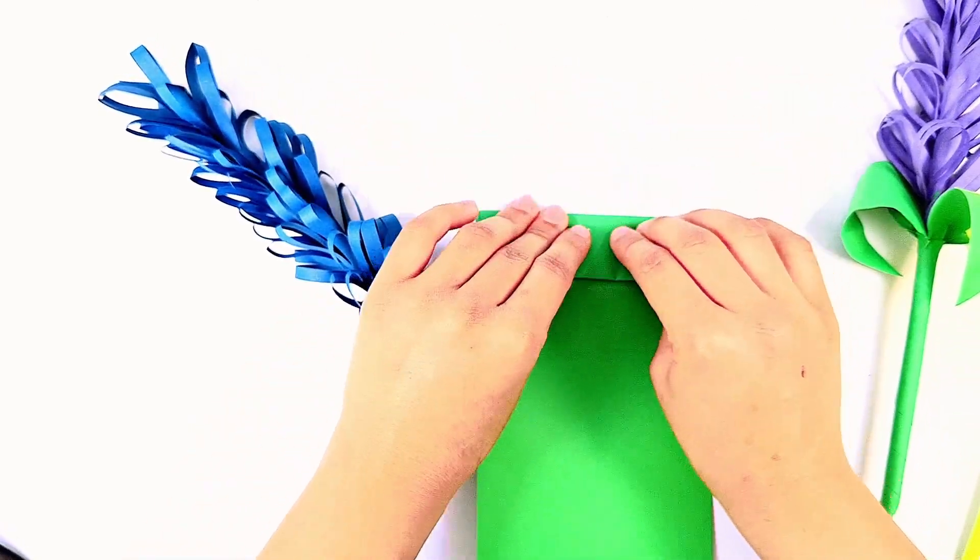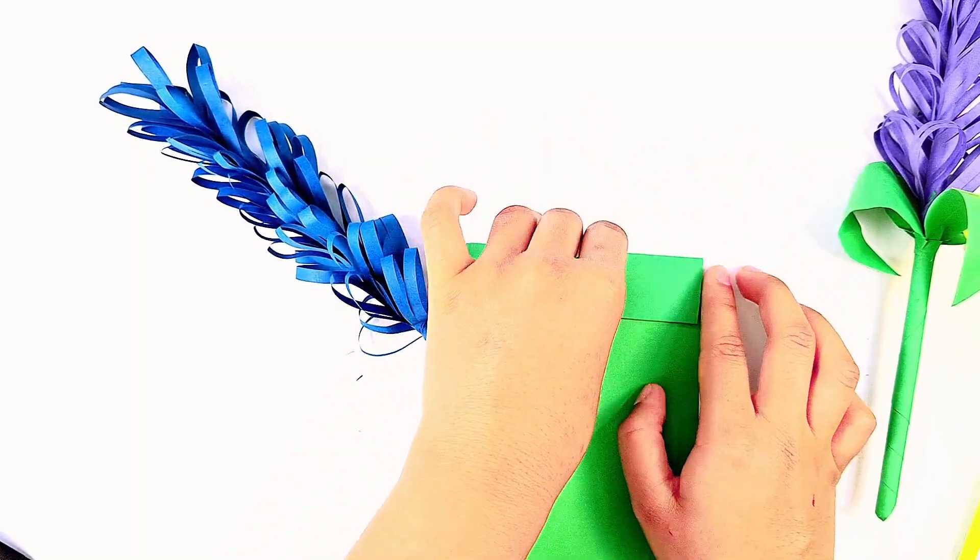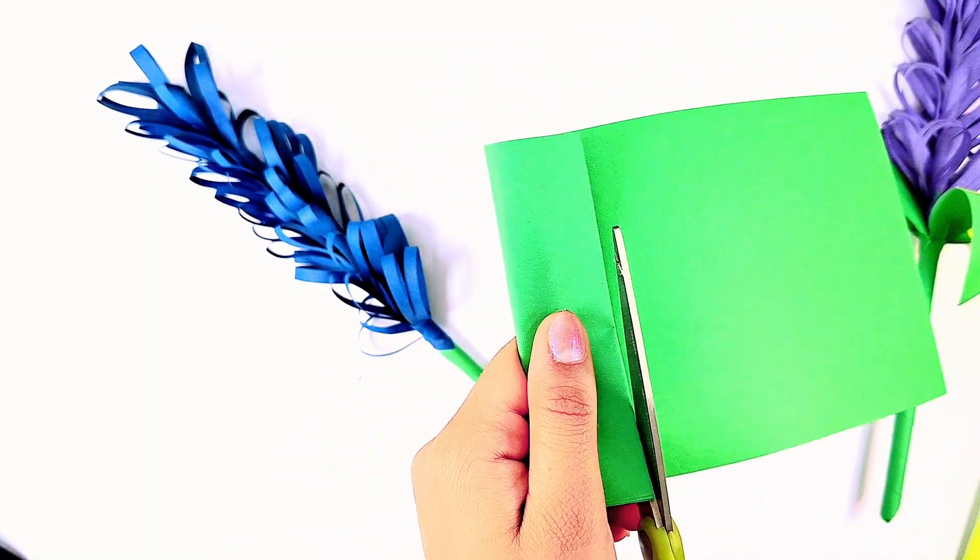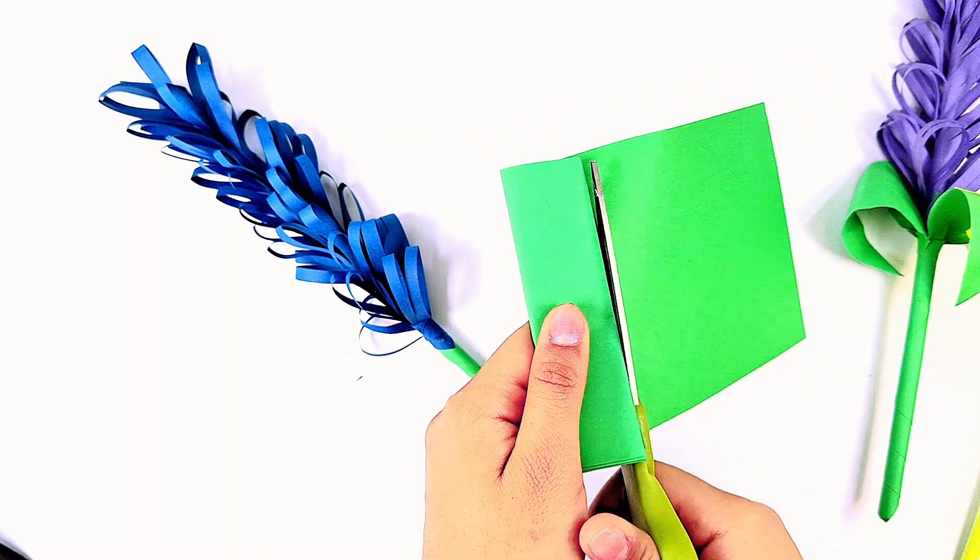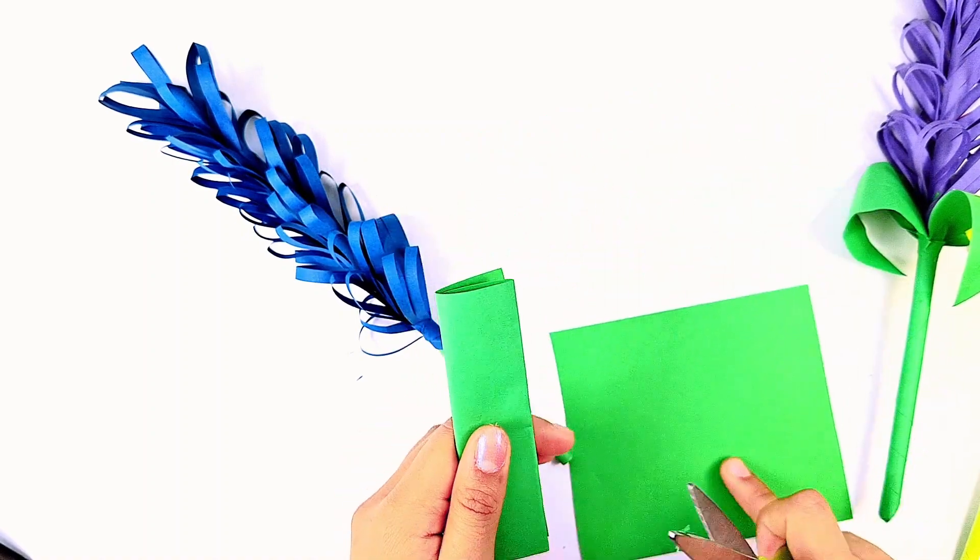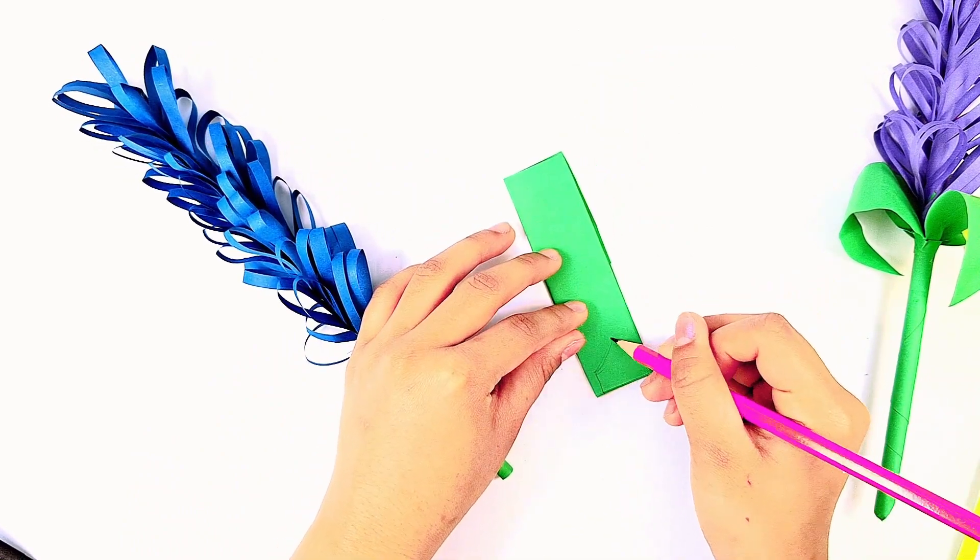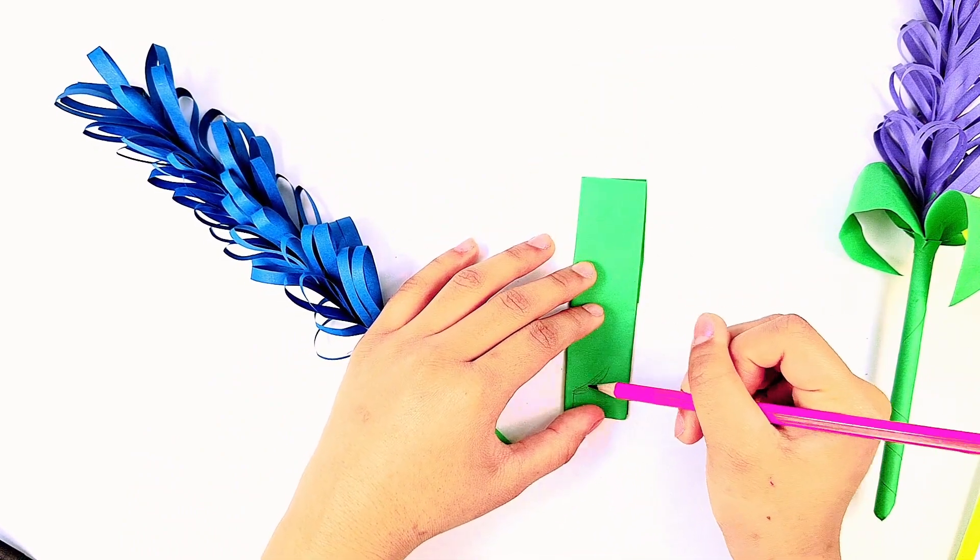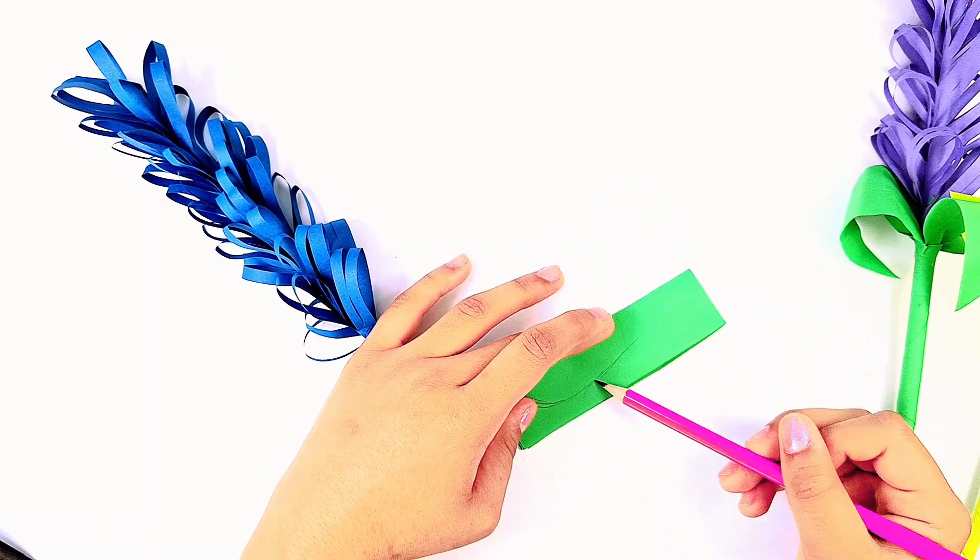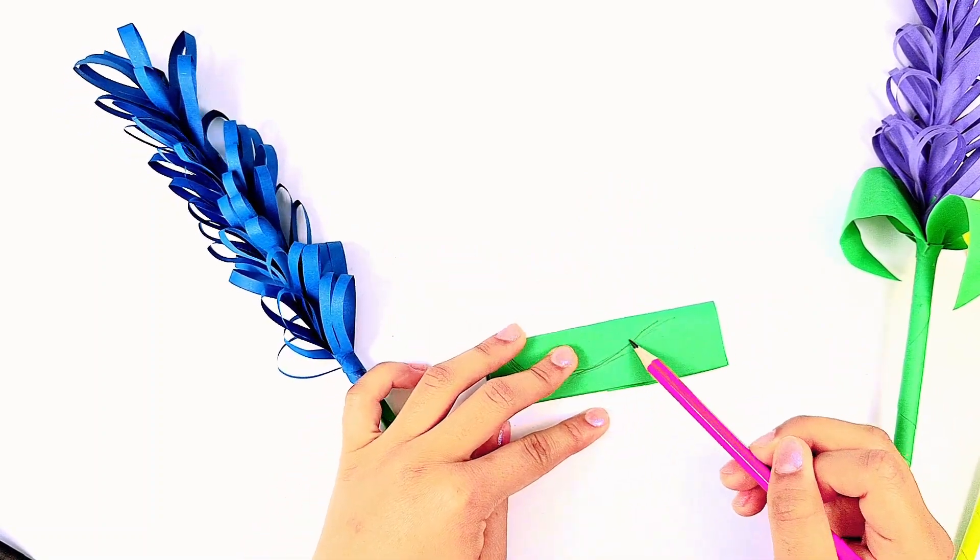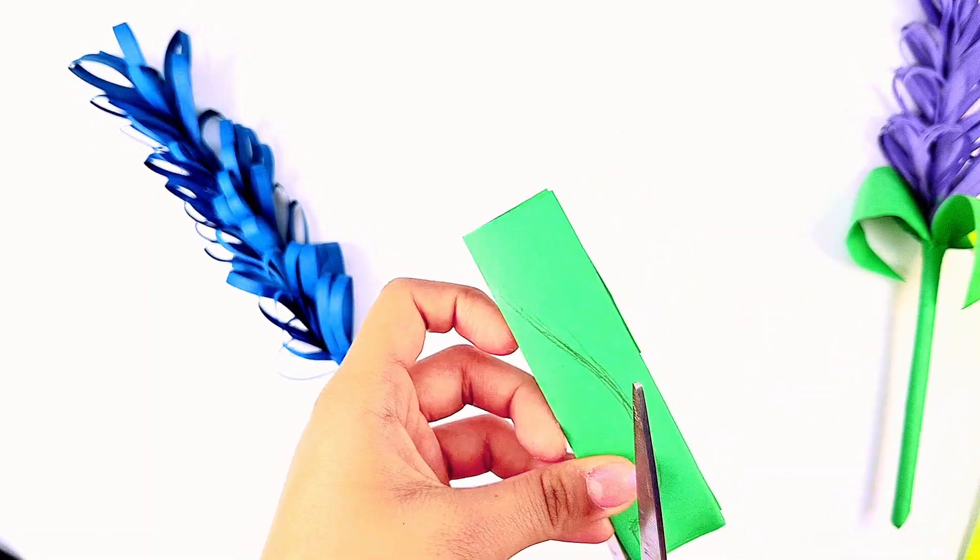Fold a piece of paper and then draw a leaf shape on it. Once you've done that, cut it out.